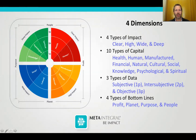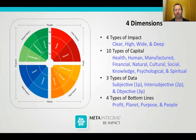There are four dimensions: four types of impact, 10 types of capital, three types of data, and four types of bottom lines. If you look at the diagram, you can see the four types of impact — deep impact, clear impact, high impact, and wide impact. I realized in looking at social impact that we use the phrase to refer to a lot of different kinds of impact. It felt useful to differentiate between the types of impact we're wanting to have, because a lot of the conversation around social impact has people talking about very different things and calling it social impact. So I've come up with these four types.